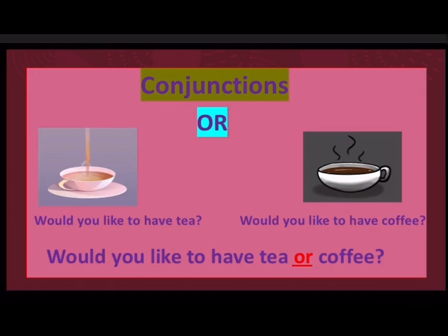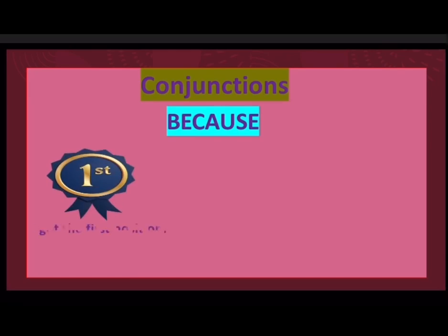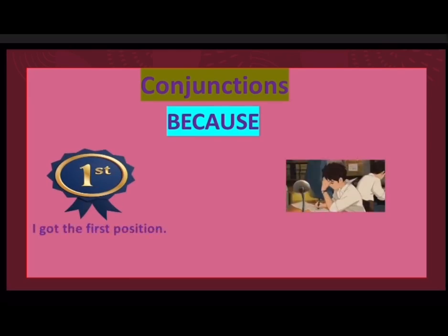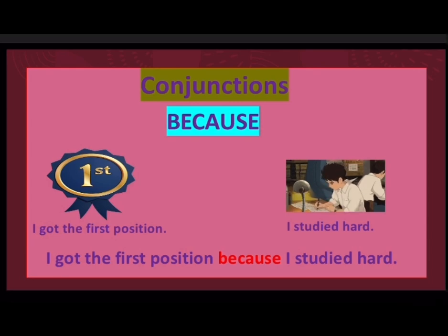Let's learn the next conjunction, that is 'because.' I got the first position. I studied hard. Here, 'because' is a conjunction because it has joined two groups of words to express the reason for something. I got the first position — and what is the reason? Because I studied hard.